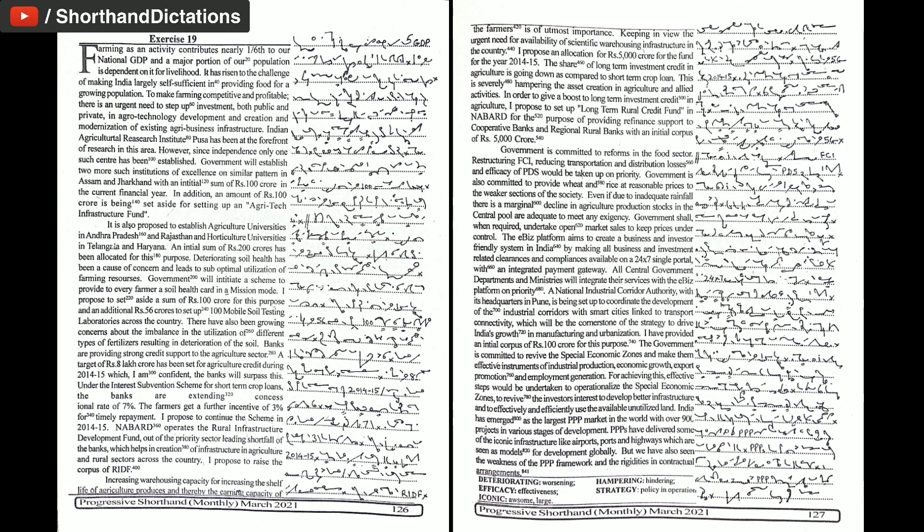Investment is needed in agro-technology development and creation and modernization of existing agri-business infrastructure. Indian Agricultural Research Institute, PUSA, has been at the forefront of research in this area. However, since independence only one such center has been established.